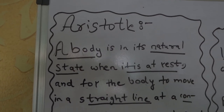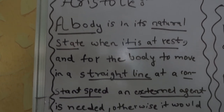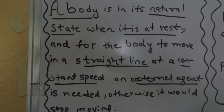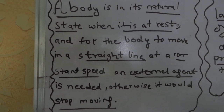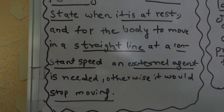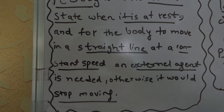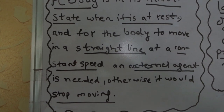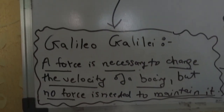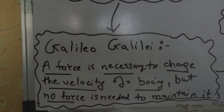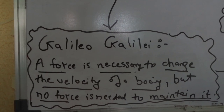Firstly, Aristotle said a body is in its natural state when it is at rest, and for the body to move in a straight line at a constant speed, an external agent is needed — otherwise it would stop moving.